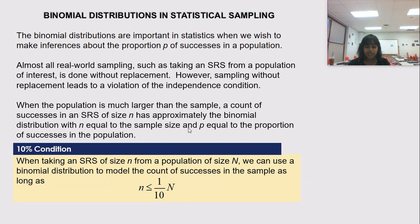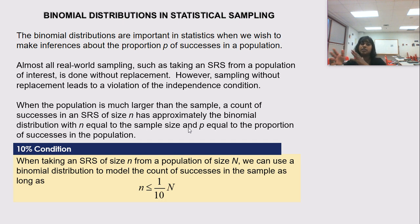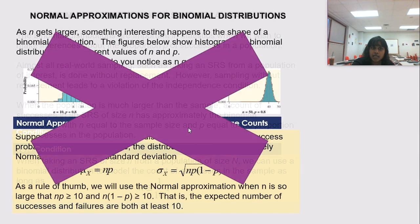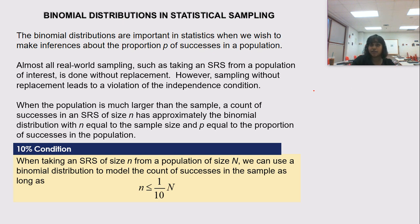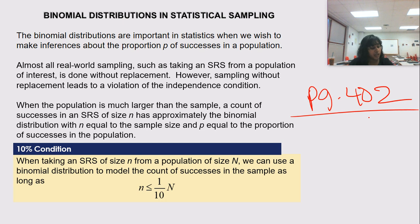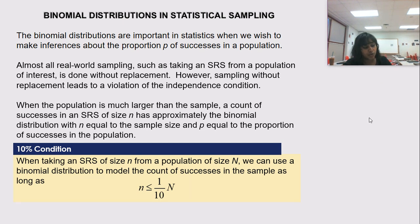Let's touch on the 10% condition. When you take a simple random sample of size N from a population, you can use the binomial distribution to model counting successes — essentially asking whether binomial distribution can be applied to real-world sampling. There's an example on page 402 that we'll go over in class or in an addendum video.